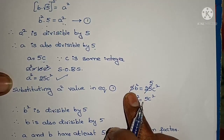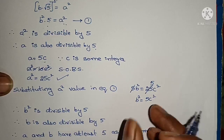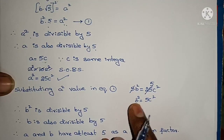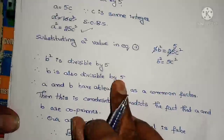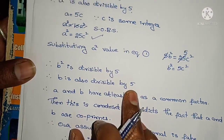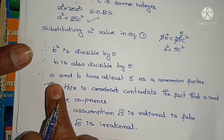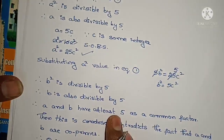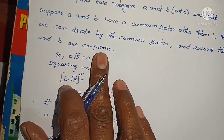After substitution, 5 cancels out and we get b² = 5c². By this, b² is also divisible by 5, and if b² is divisible by 5, then b is also divisible by 5. So both a and b are divisible by 5, meaning 5 is a common factor for both a and b.